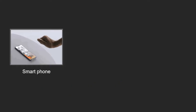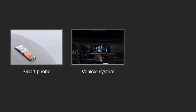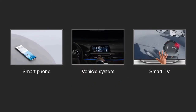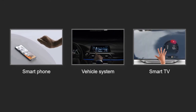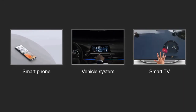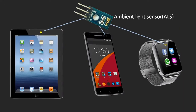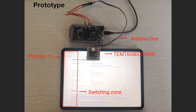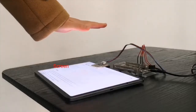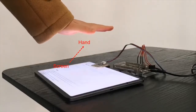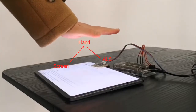In-air gesture recognition enables natural and contactless human-computer interaction. In SMART, we only use signals received from the ambient light sensor to realize gesture recognition. We use the screen-hand ambient light sensor communication channel.